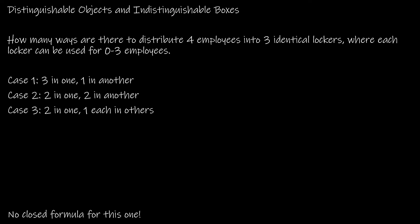Now we have distinguishable objects and indistinguishable boxes — for me, the hardest one. Here we have four employees going into three identical lockers where each locker can hold zero to three employees. The employees are distinguishable — call them A, B, C, D — but the lockers are identical. There's no closed formula here, so we break it down into cases: three in one locker and one in another; two in one and two in another; or two in one and one in each of the others.